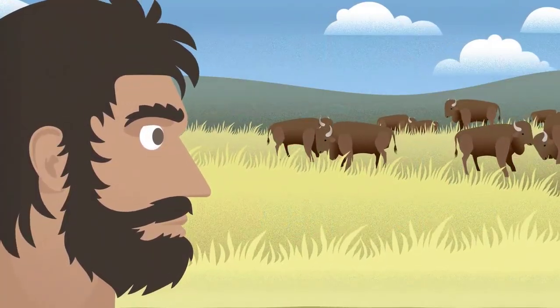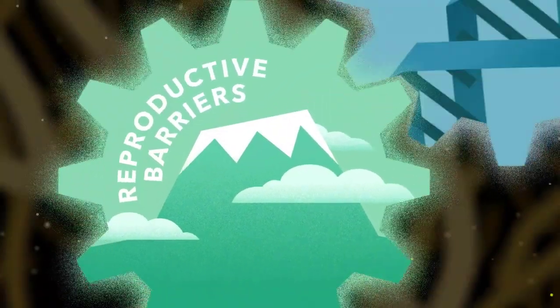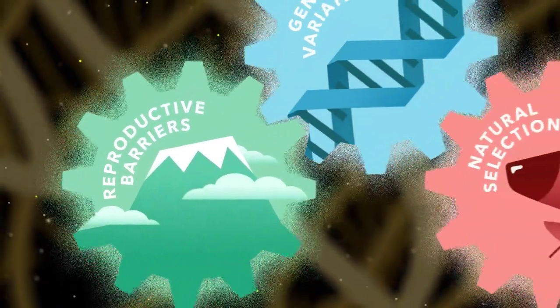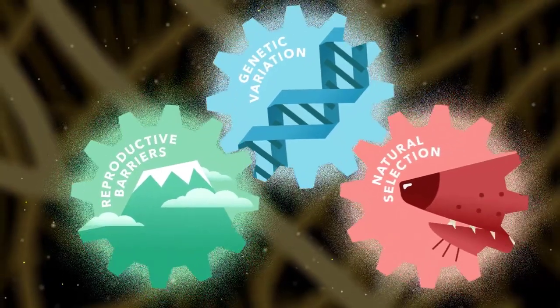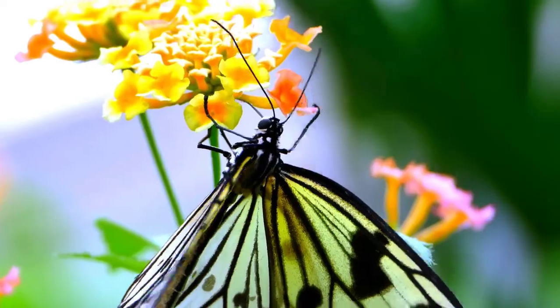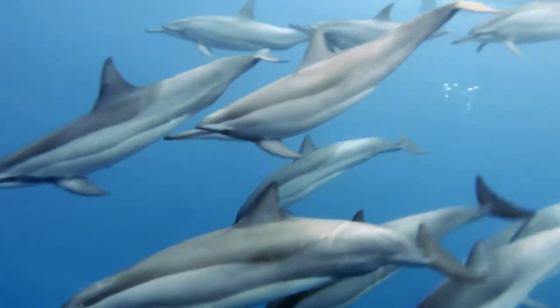With repeated rounds over billions of years, reproductive barriers, mutation and allele shuffling, and natural selection, one ancestral lineage has expanded into the diversity of life that surrounds us today.